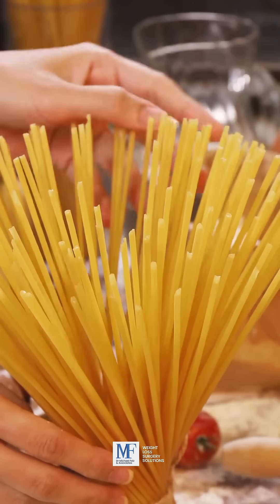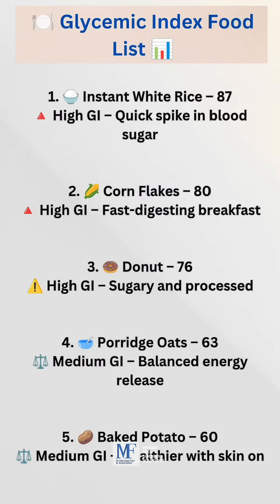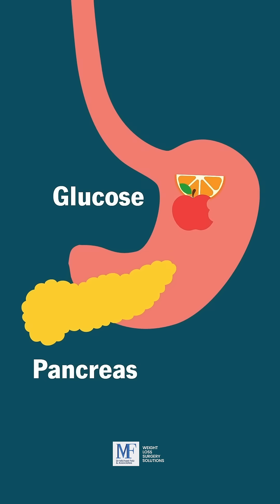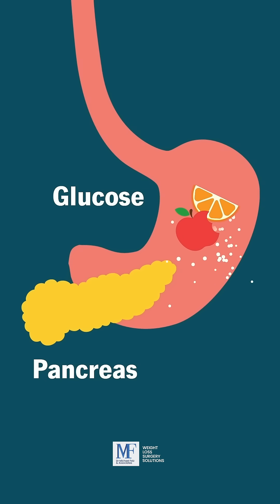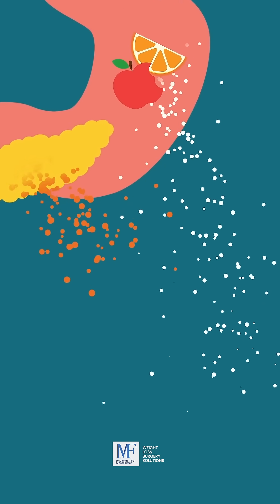The glycemic index measures how quickly a food is converted or broken down into sugar, which then spikes your glucose level — your blood sugar level — which in turn causes insulin to be released. Ultimately, that food gets broken down very quickly and gets stored on your body as excess calories or fat.